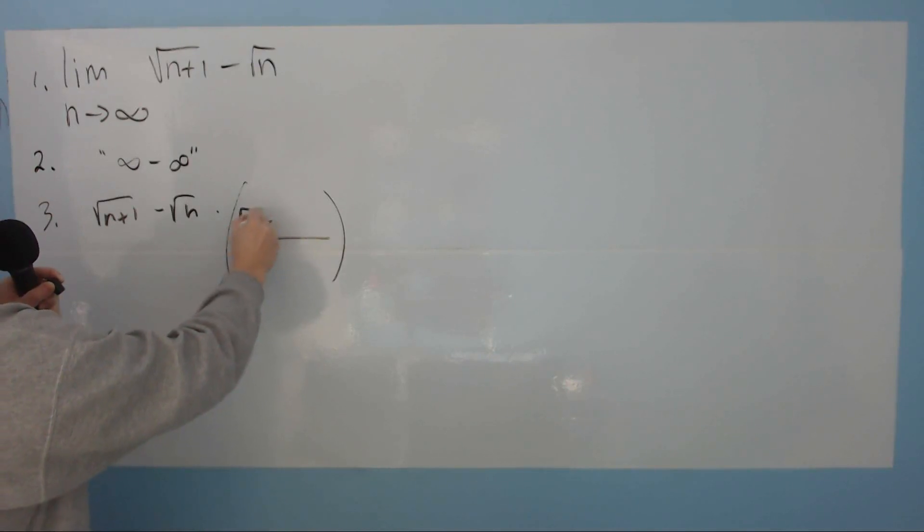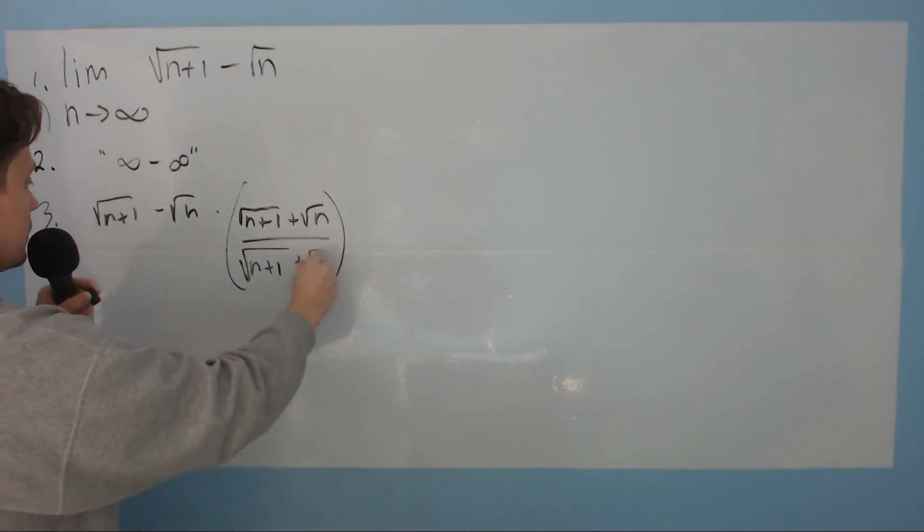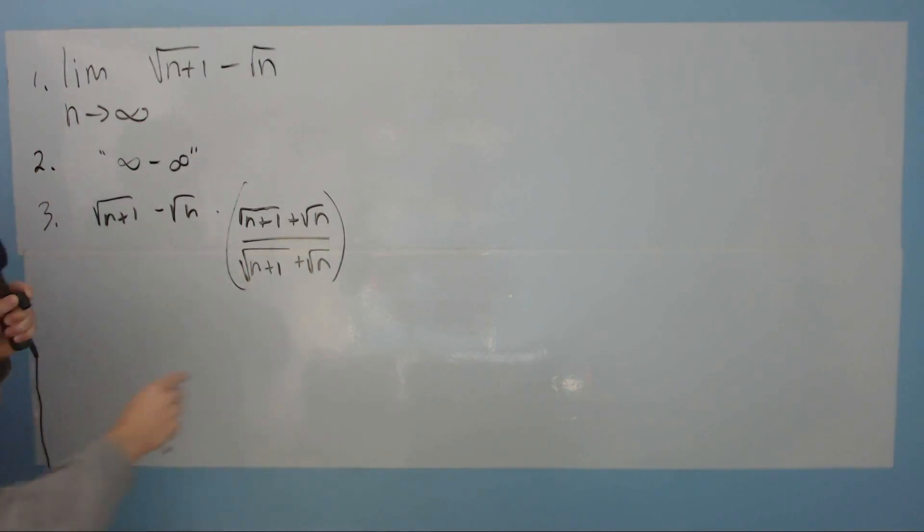You're going to take n plus 1 within the root symbol, and then instead of putting a minus here, I'm going to put a plus and then plus the root of n. Remember, you have to have a form of the number 1. So on the bottom, you must put the same thing, n plus 1 and then here plus the root of n. So this expression within the parentheses, despite its appearances, remember, is just 1.